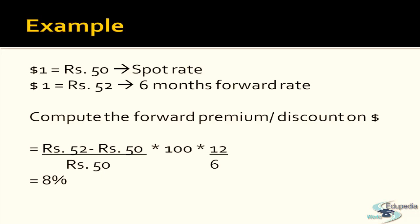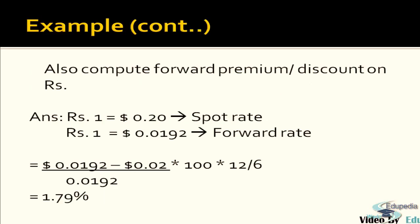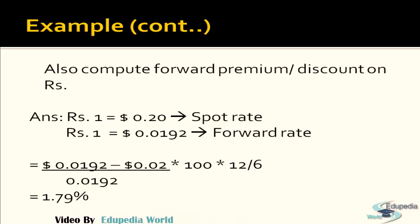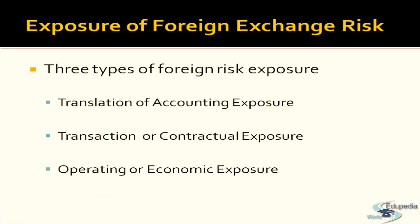Since it is positive, dollar is at 8% premium. To compute forward premium or discount in rupees, convert to indirect quote: rupee 1 equals 1/50 = 0.020 (spot rate), and forward rate is rupee 1 equals 0.0192. Then: (0.0192 − 0.020) / 0.020 × 100 = −1.79%, meaning rupee is at a discount in the forward market. This fluctuation causes some currencies to strengthen and others to weaken.